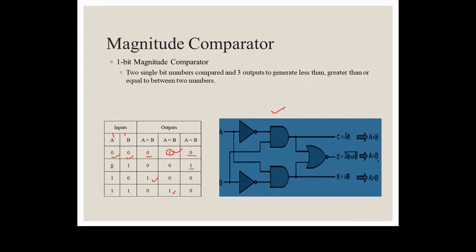To design this circuit, for A greater than B the output is high only when A=1, B=0, meaning the expression is A·B̄. For A equal to B, the expression uses a NOR gate. For A less than B, the expression is Ā·B. So in this way we can implement this circuit. If the input is 0,0 both are equal so that output will be high. Likewise if A is greater, that corresponding output will be high.